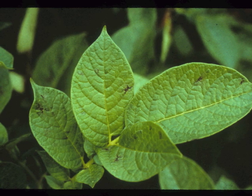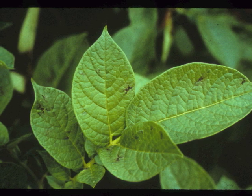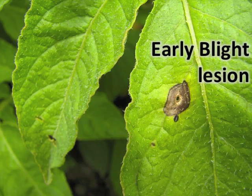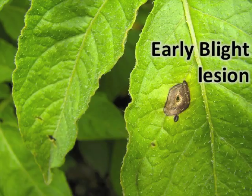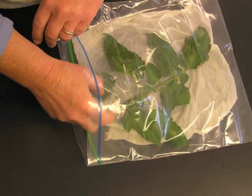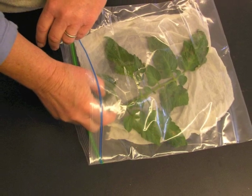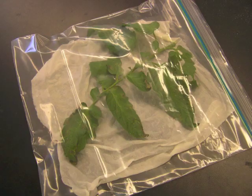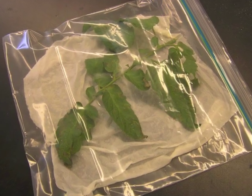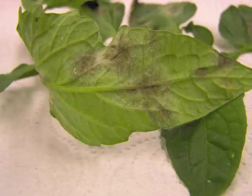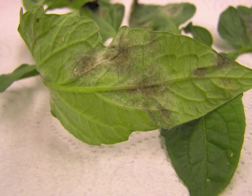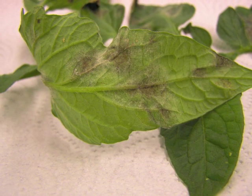Very new late blight lesions resemble early signs of several other diseases, and suspect leaves should be brought in from the field and held in a plastic bag with a damp paper towel to allow symptoms and spores to develop.